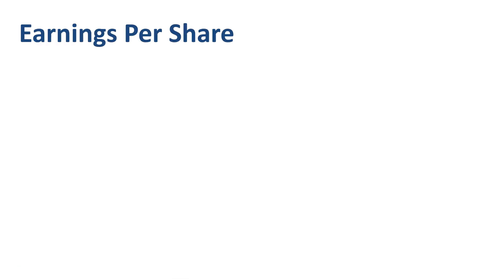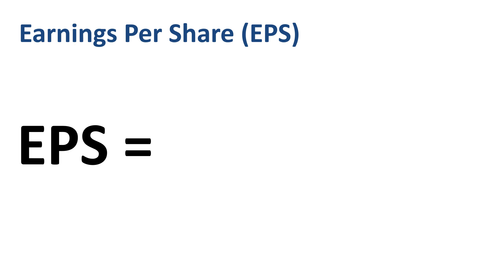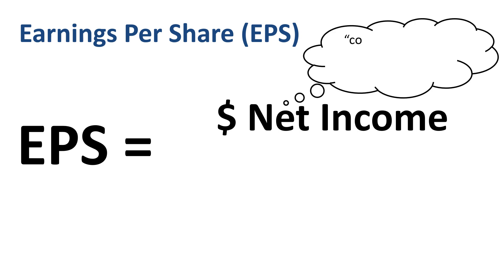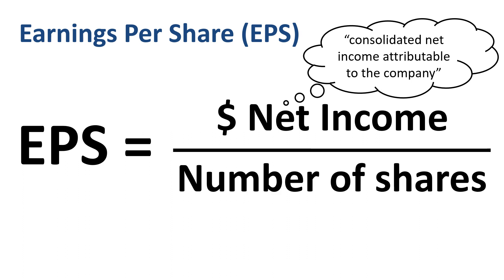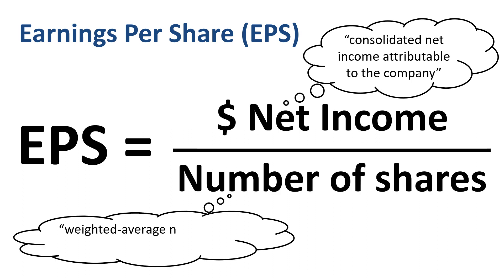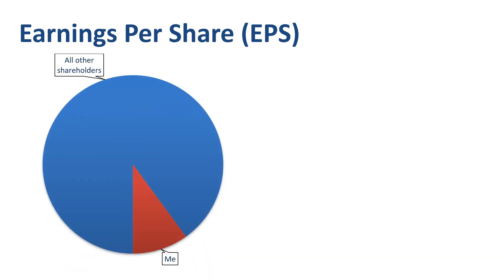As the term earnings per share suggests, the formula to calculate EPS is fairly simple. Take net income — or more officially, the consolidated net income attributable to the company — and divide it by the number of shares, or more officially, the weighted average number of common shares outstanding. You take the absolute number of net income, which can be positive or negative and large or small, and make it relative by dividing it by the number of shares. How much net income belongs to each share?